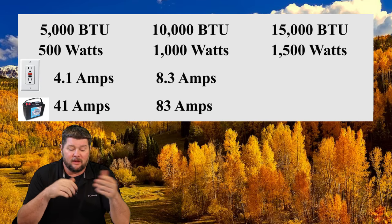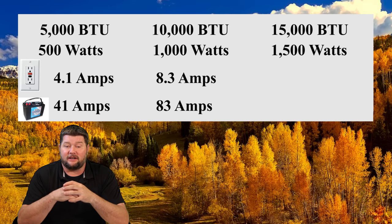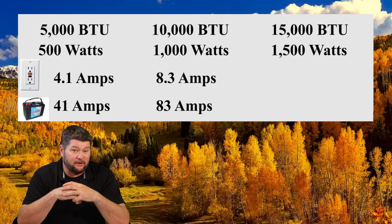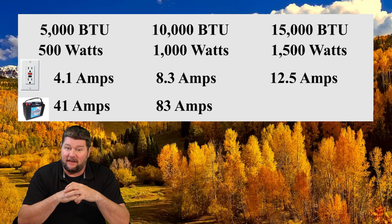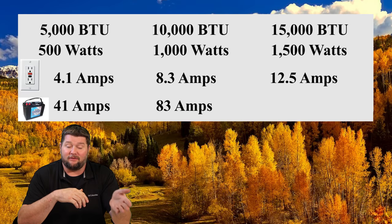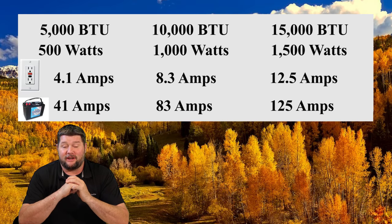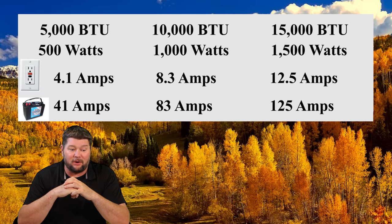Last but not least, if you're running a 1,500-watt air conditioner and you're plugged in at home off a 120-volt system, that's going to run you 12.5 amps. If you're trying to run that off battery power on a 12-volt system, it's going to run you 125 amps. So it really sucks down a lot of power when you're using 12-volt systems.